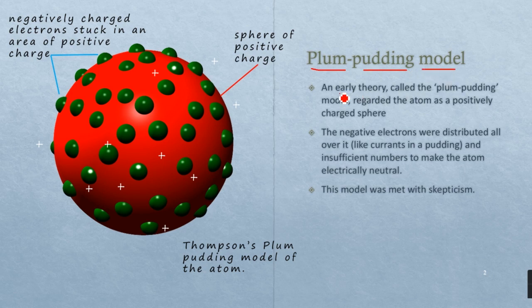This model was developed as an early theory for atomic structure, describing the atom itself as a positively charged sphere. In this diagram you can see a sphere which is positively charged, and the negatively charged electrons were distributed all over it like currants in a pudding.